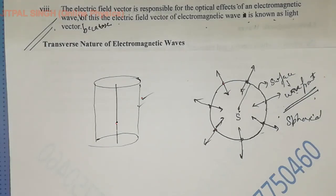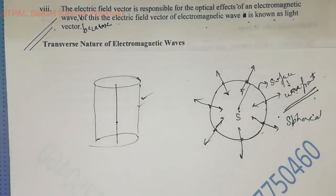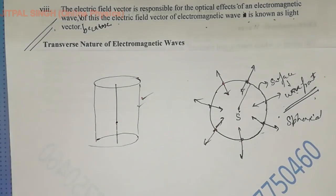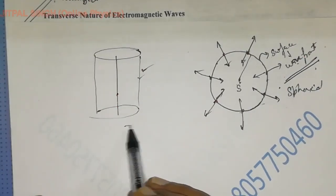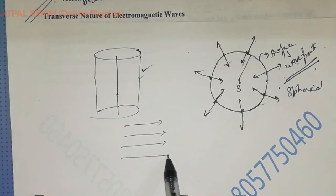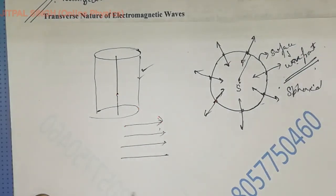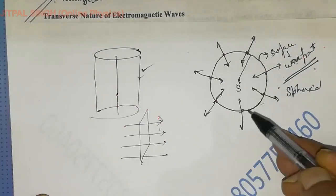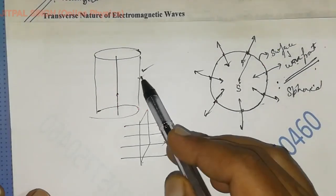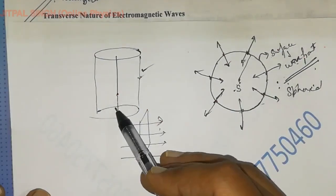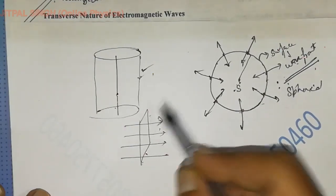I hope the term wave front is clear to everyone. Cylindrical wave front for linear source, spherical wave front for point source. And if we imagine a very big cylindrical or very big spherical wave front and take a very small part of it, that small part represents a plane wave front. For a plane wave front, it is necessary that the rays are perpendicular to the wave front. So if light rays are parallel to each other, then the wave front will be a plane wave front. In general, there are three types of wave front: spherical, cylindrical, and plane wave front.